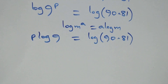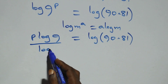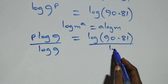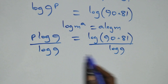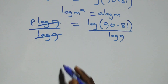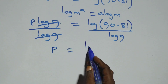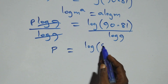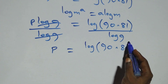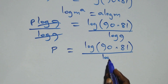This becomes p log 9 equals to log(90 times 81). Then here we divide both sides by log 9 — divide this side by log 9, also divide this side by log 9. The log 9 terms cancel each other, and we have p equals to log(90 times 81) over log 9.